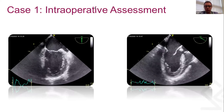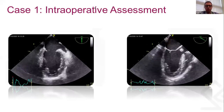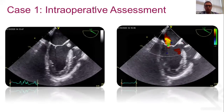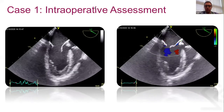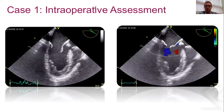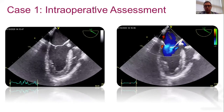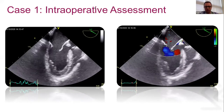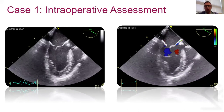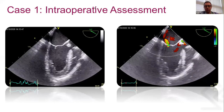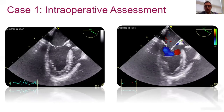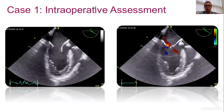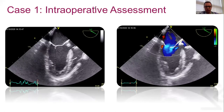Adding color flow Doppler, we can see the patient has some sort of central mitral regurgitation. This mitral regurgitation is likely related to poor leaflet coaptation due to leaflet restriction.